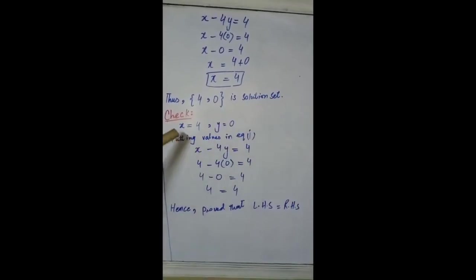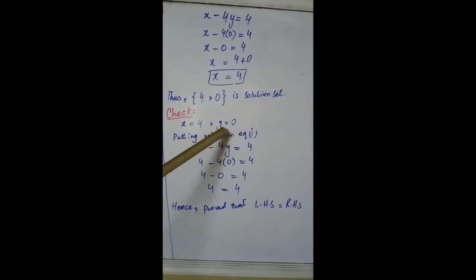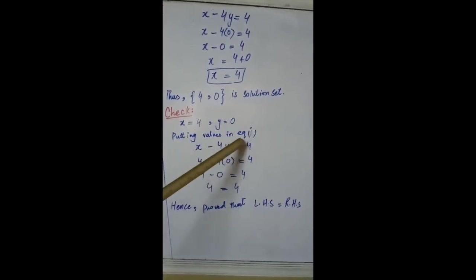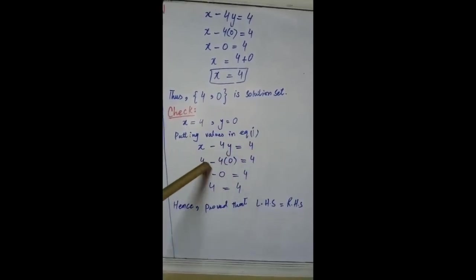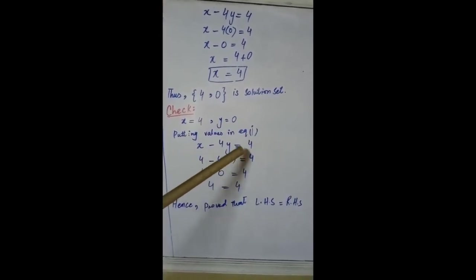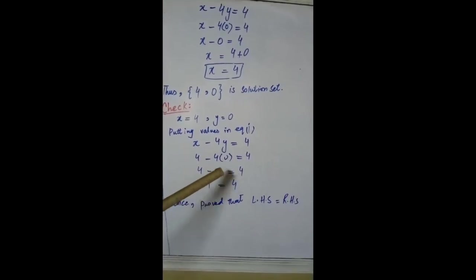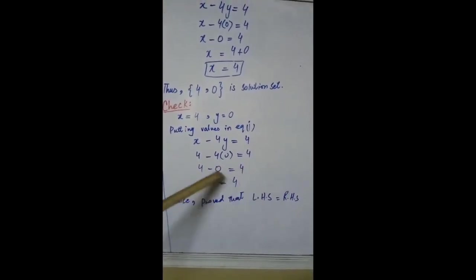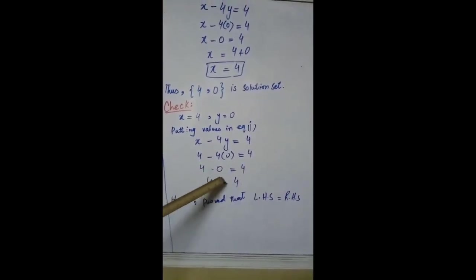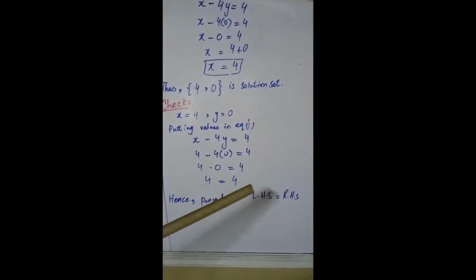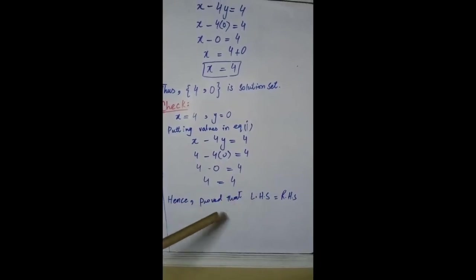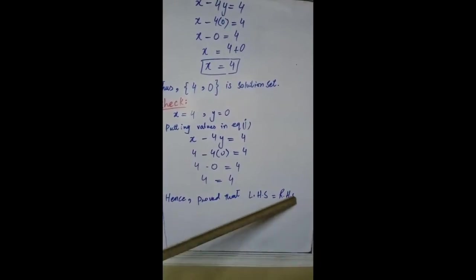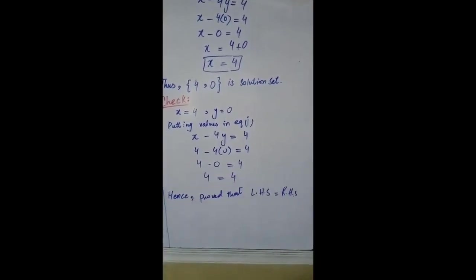Check: x = 4, y = 0. Putting values in equation 1: x - 4y = 4 → 4 - 4(0) = 4, 4 - 0 = 4, and 4 = 4. Hence proved that left-hand side is equal to right-hand side. Thank you.